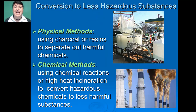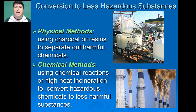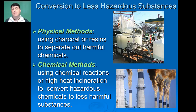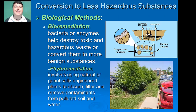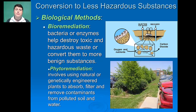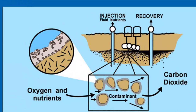When converting to less hazardous forms, there are three strategies we can apply: physical, chemical, or biological methodologies. Physical methods include filtering hazardous substances out using charcoal or resins to separate harmful chemicals from less harmful ones. A chemical strategy would use a chemical reaction or high-heat incineration to convert hazardous chemicals into a less harmful form. Bioremediation is one biological method, in which we use bacteria or enzymes to help destroy toxic and hazardous waste or convert them into more benign substances.